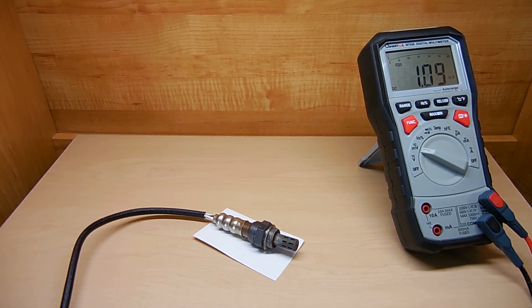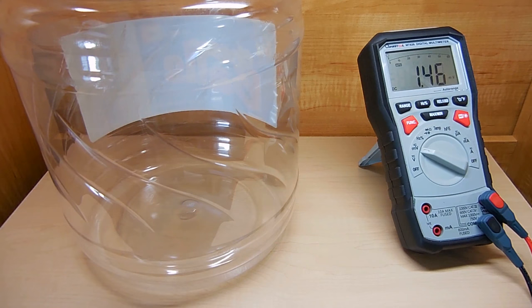Now the last thing I want to do is just show you what this is going to do when I place it in a pure oxygen environment. Let's do that, and then take a look at the meter. Okay, now just like the propane test, when the flame is removed from the tip of the oxygen sensor, the voltage goes low.